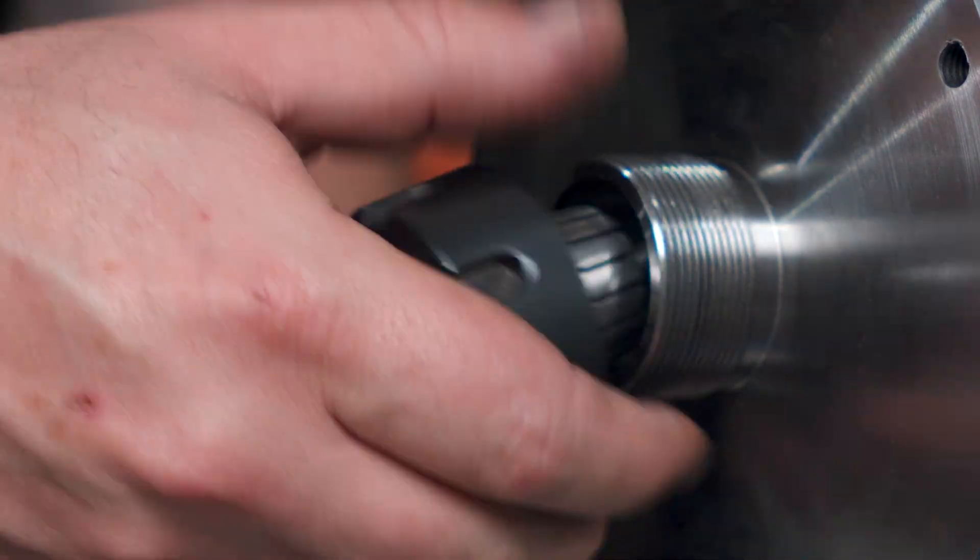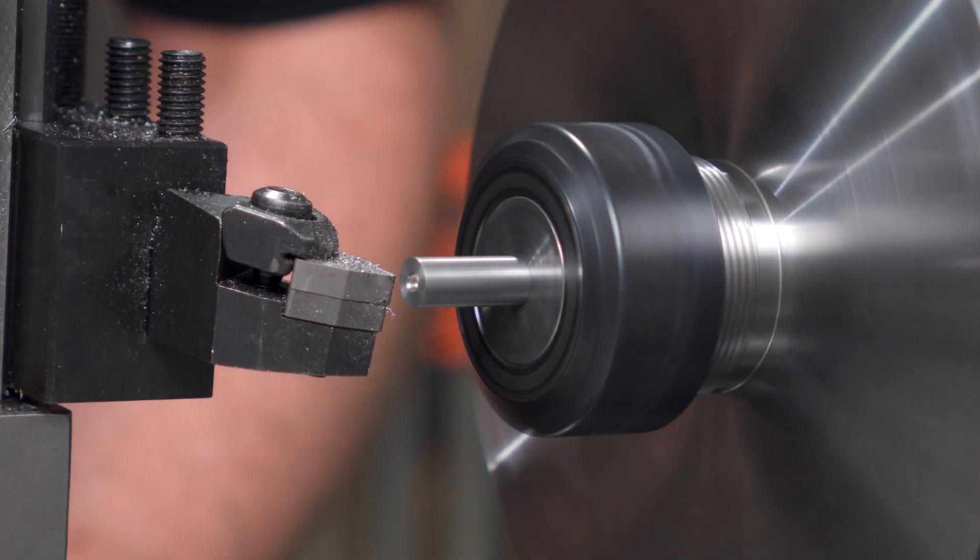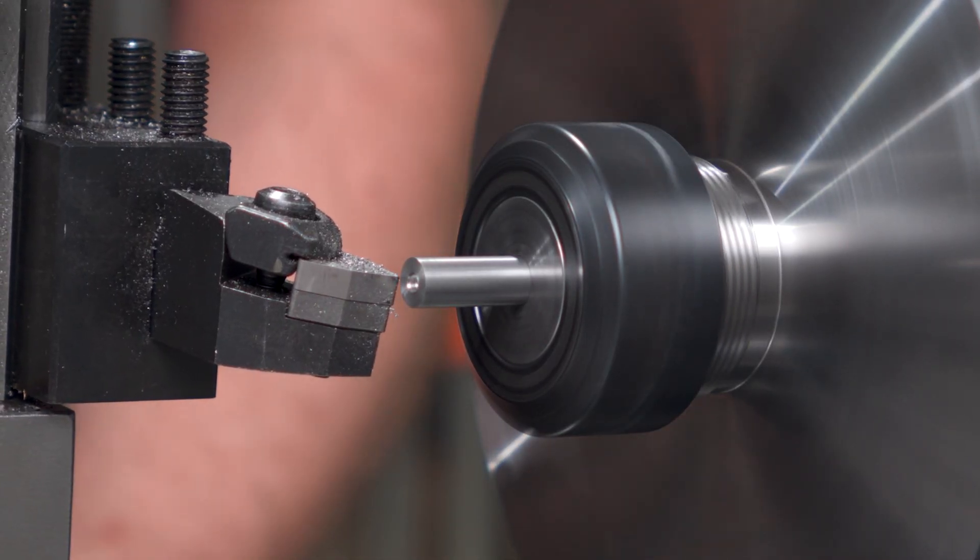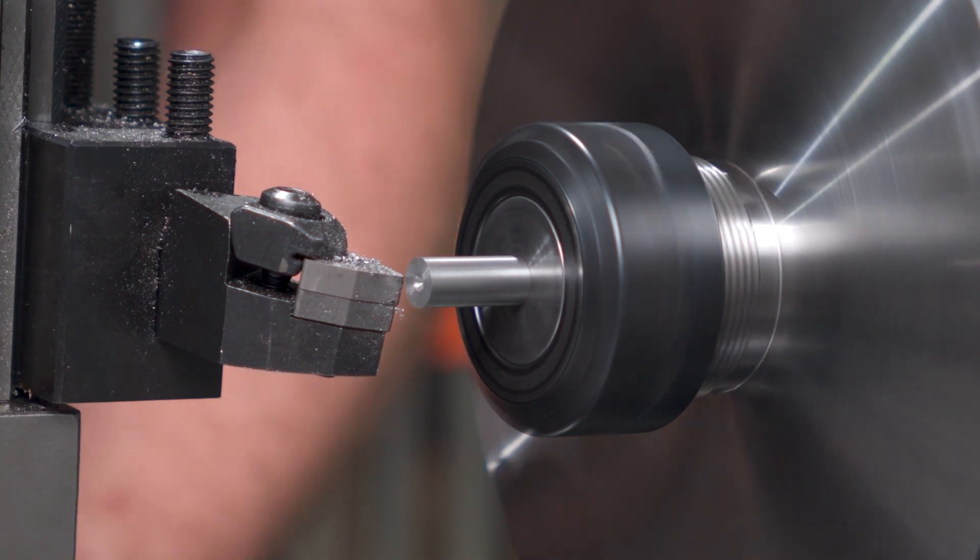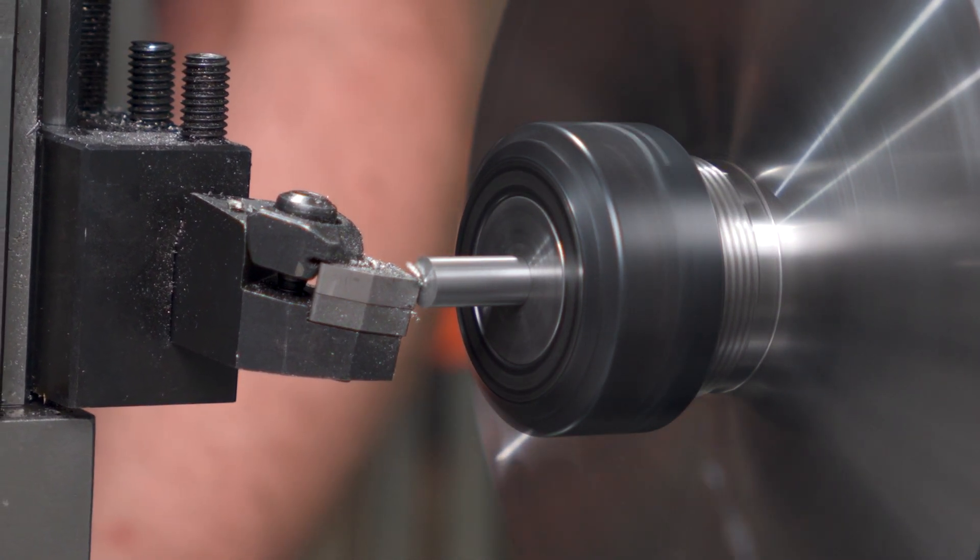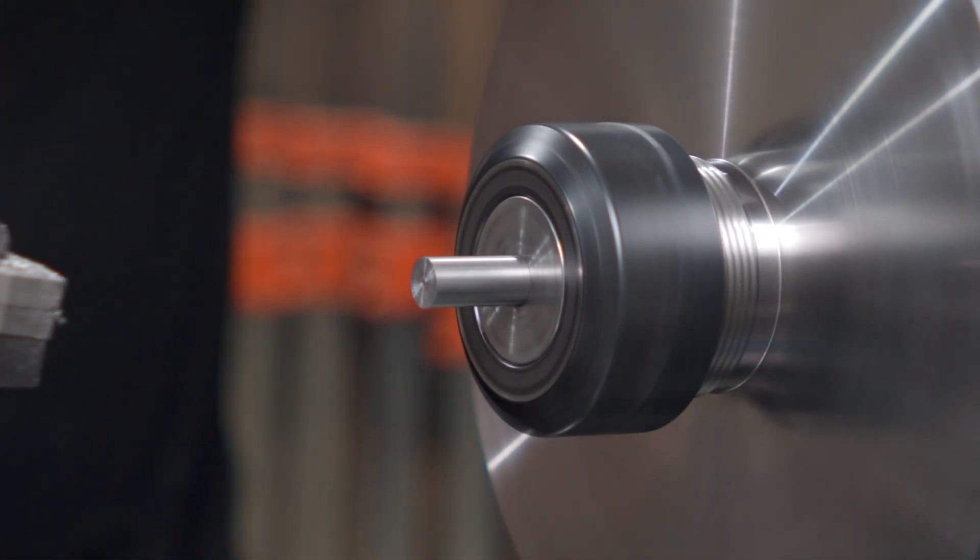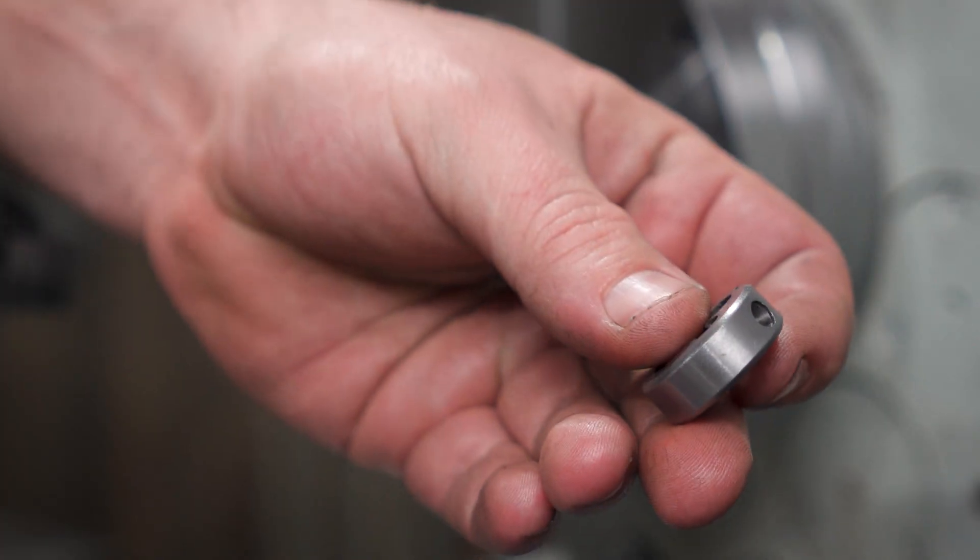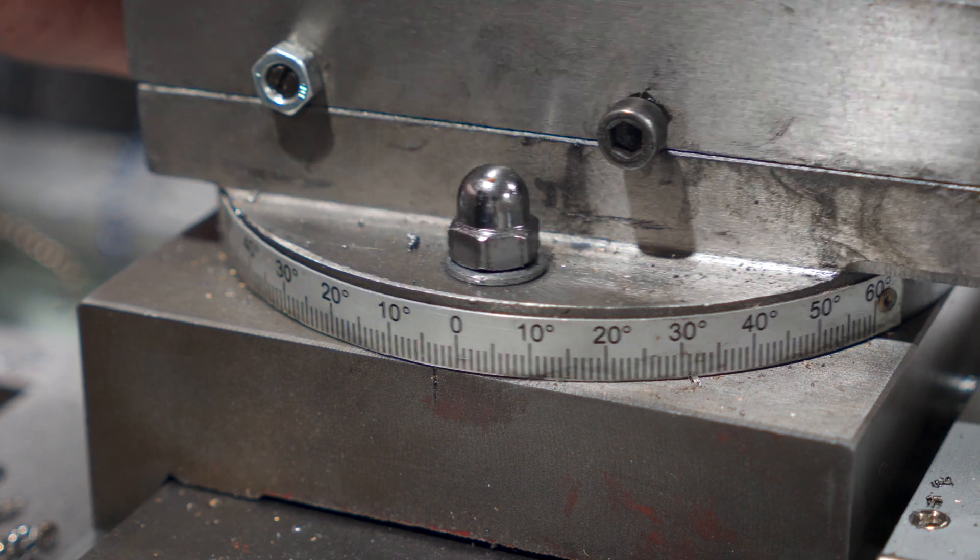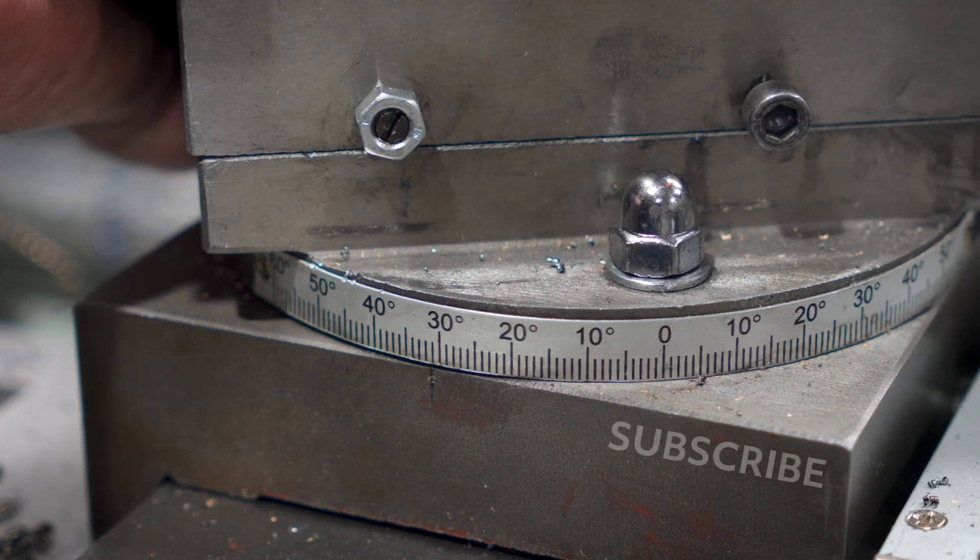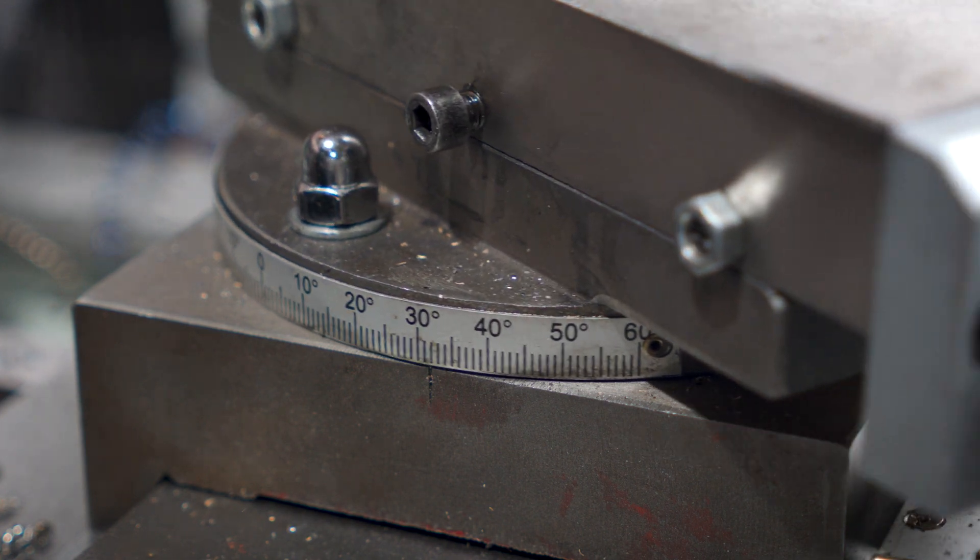Then another flip and I can get set up to put a point on this thing. That is, after I turn down this center drill mark. Now the dies I use seem to have about a 90 degree dimple in them, so I'll set the compound for 45 degrees to give me a 90 degree included angle. Come on mate, that's the wrong way. There you go.